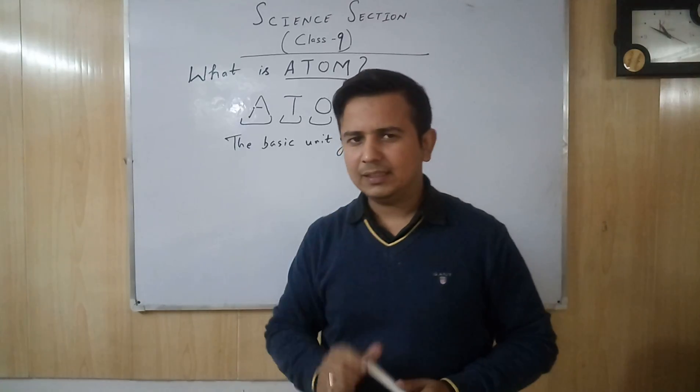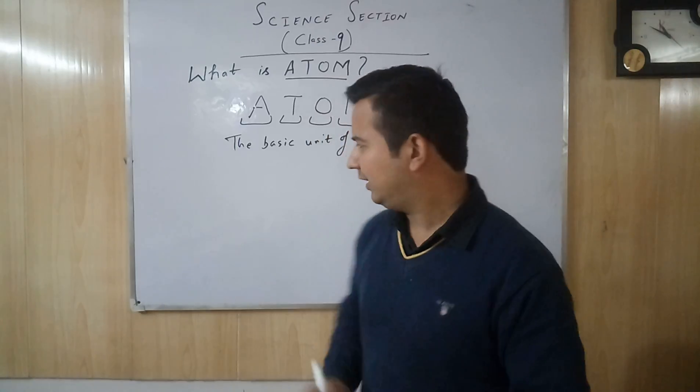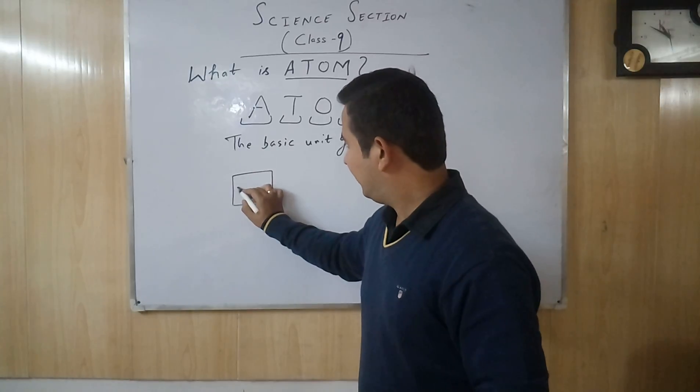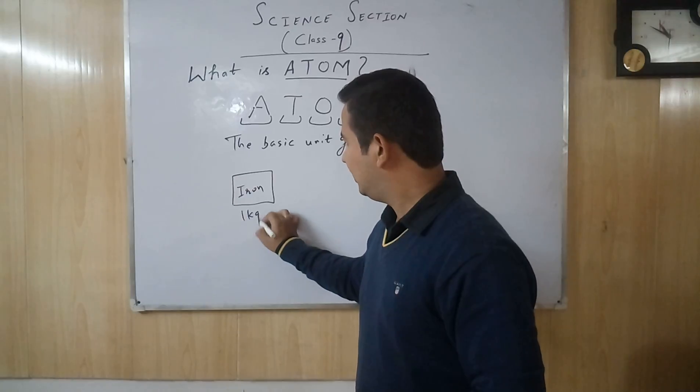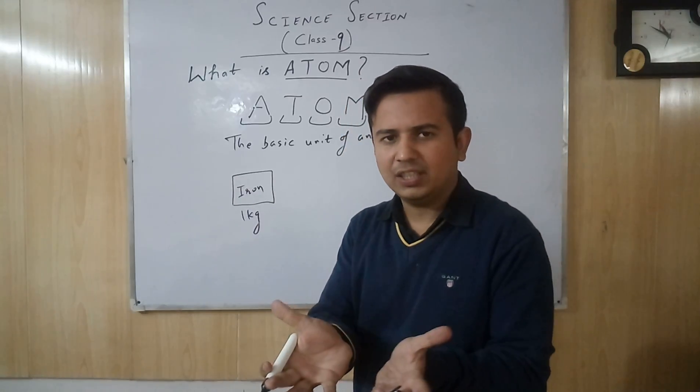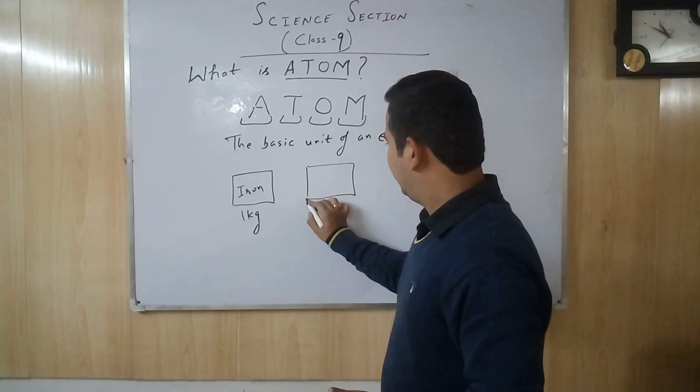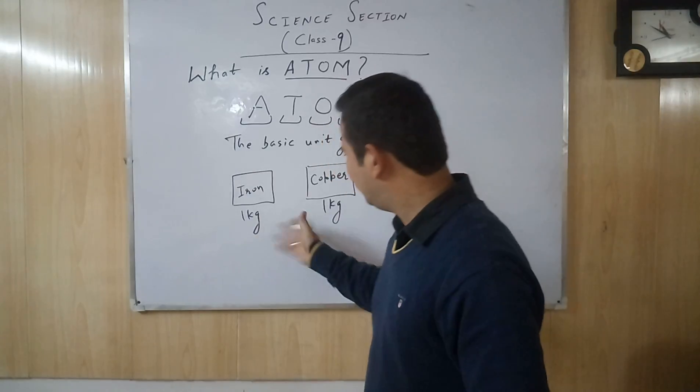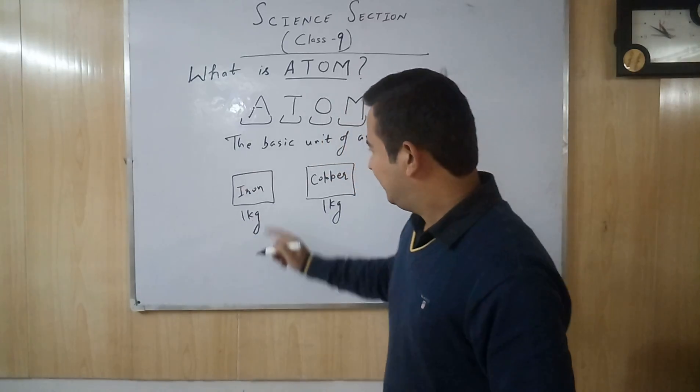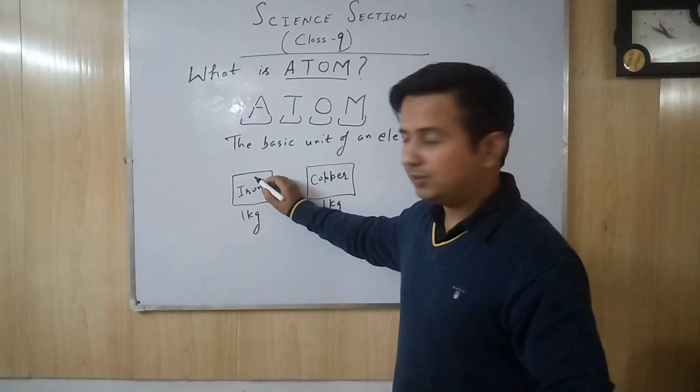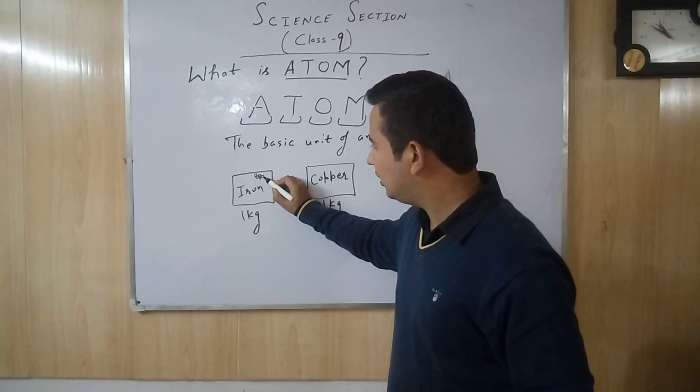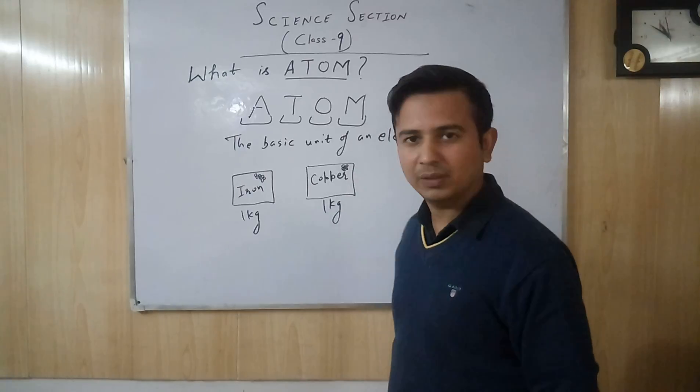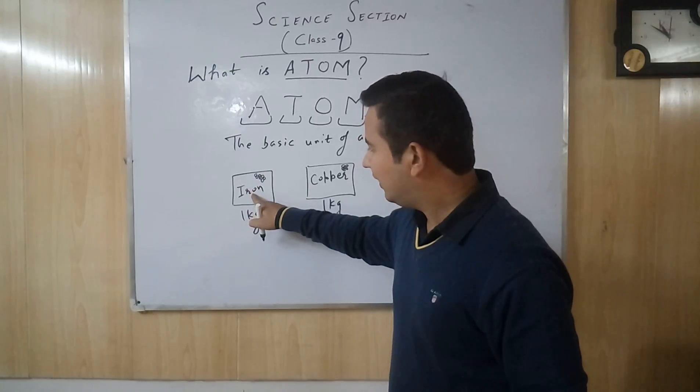Now, we will think about elements. This is a very simple idea. You have 1 kg of iron, 1 kg of pure block. It weighs 1 kg. You can divide it into smaller pieces, but atoms are the basic unit.